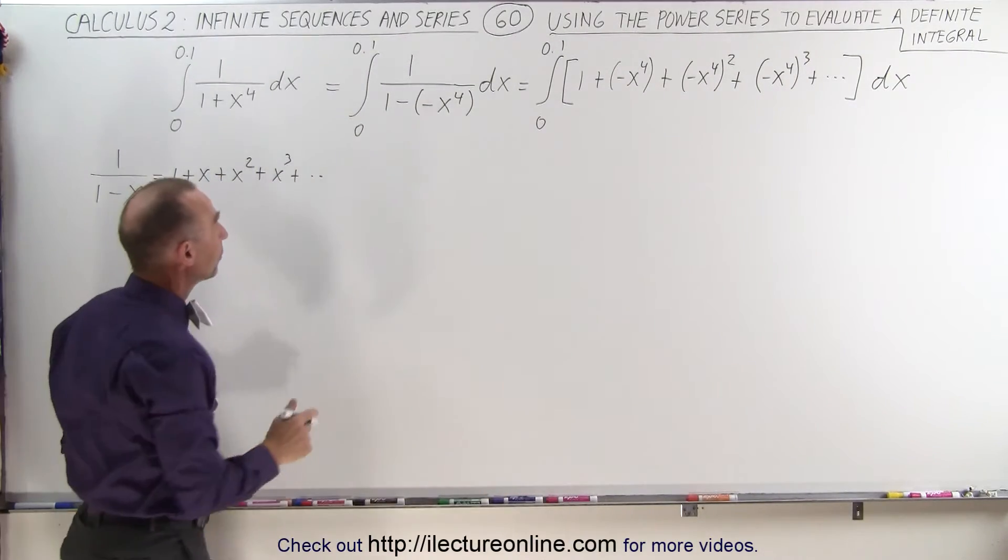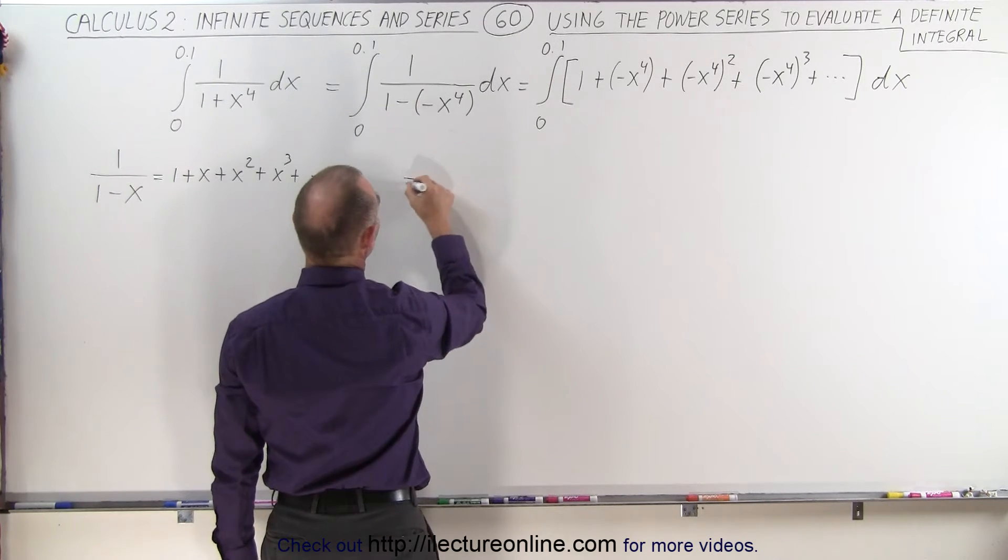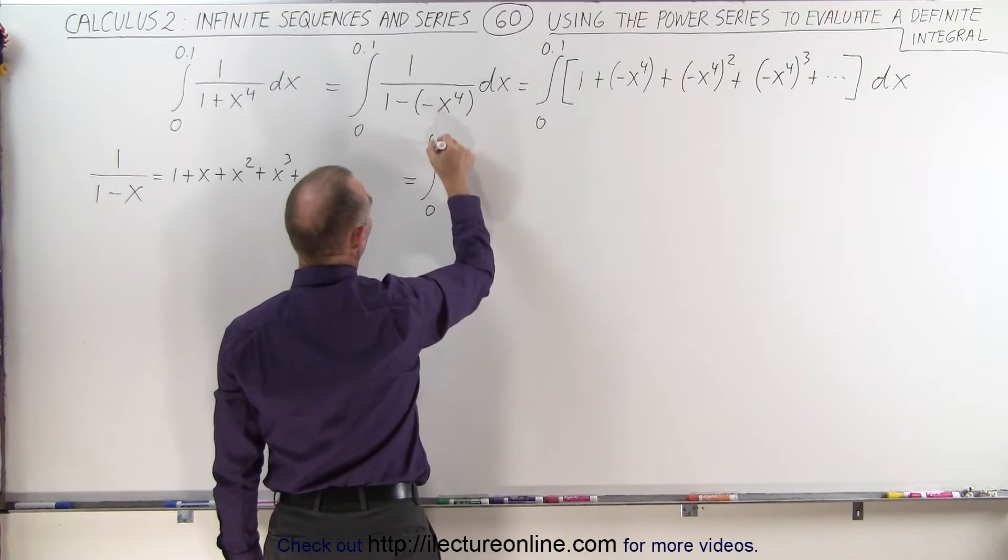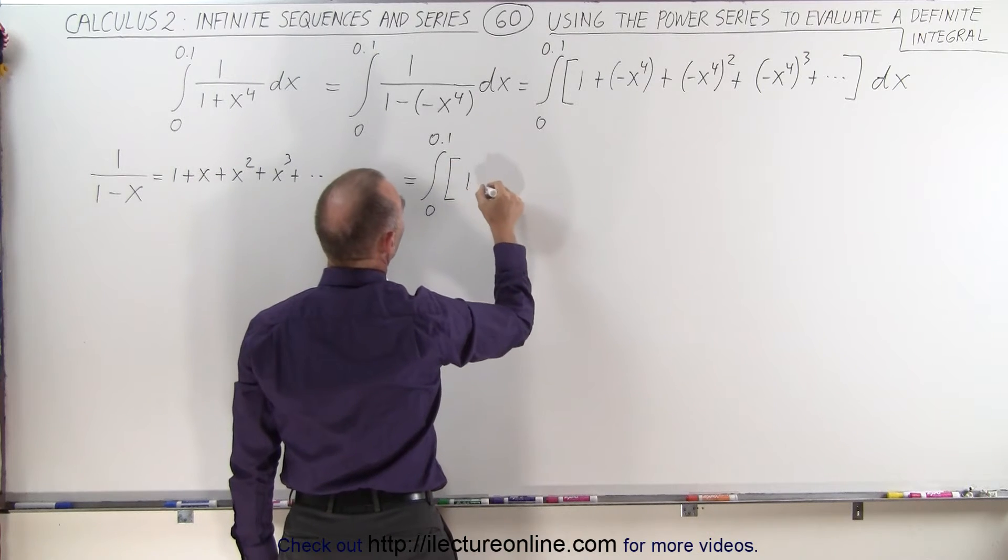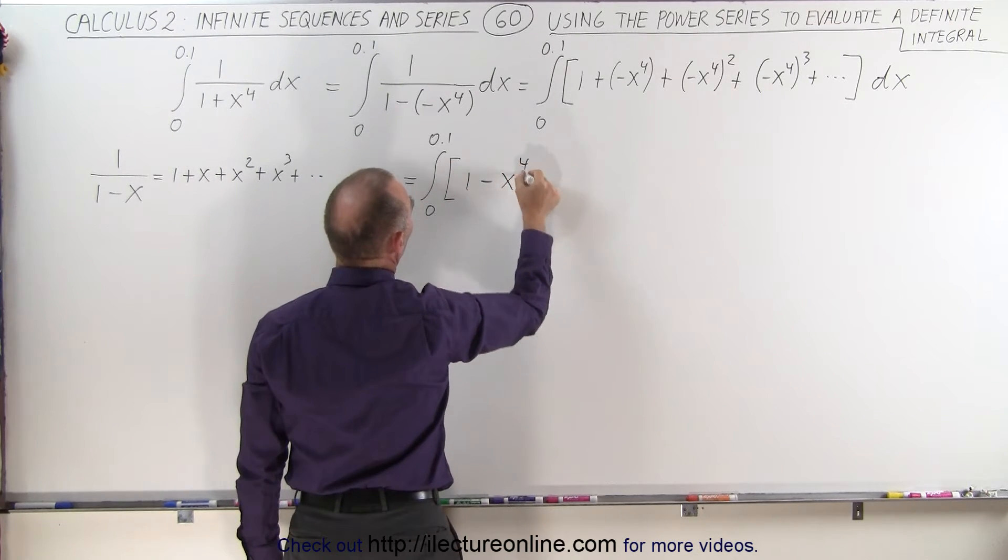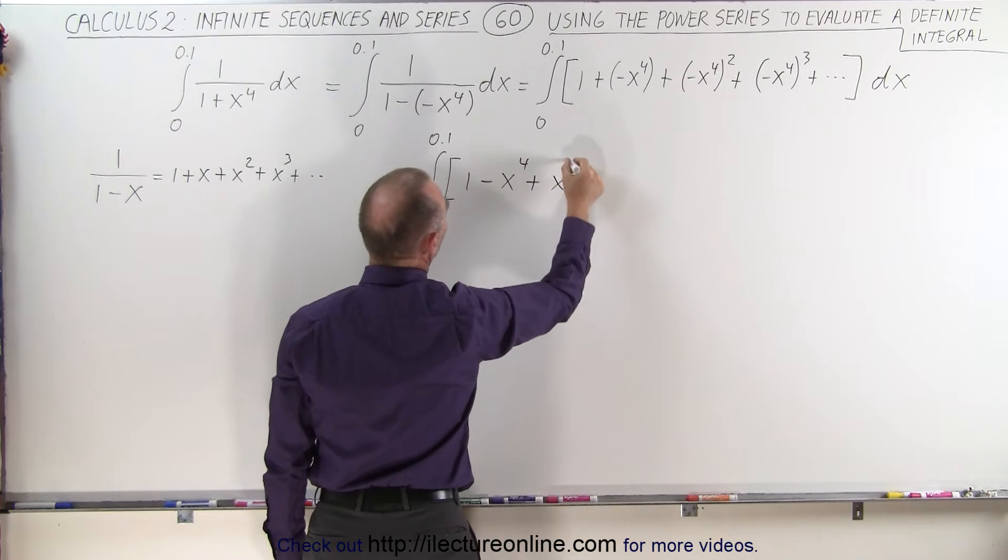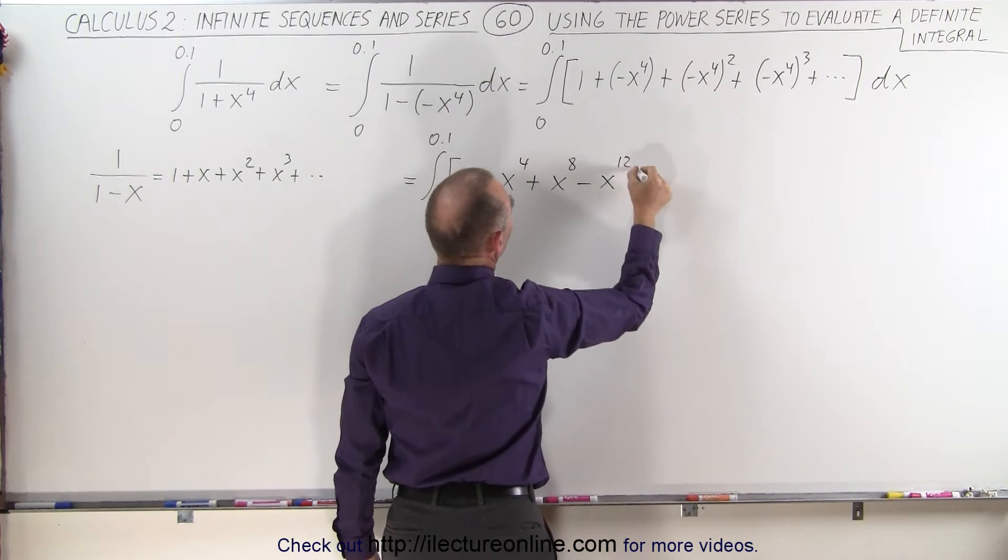And now if we multiply that out, we can see that this is equal to the integral from 0 to 0.1 of the quantity 1 minus x to the fourth, plus x to the eighth, minus x to the twelfth.